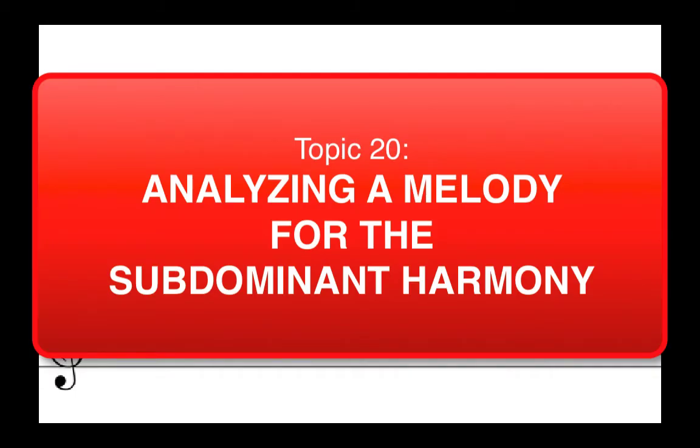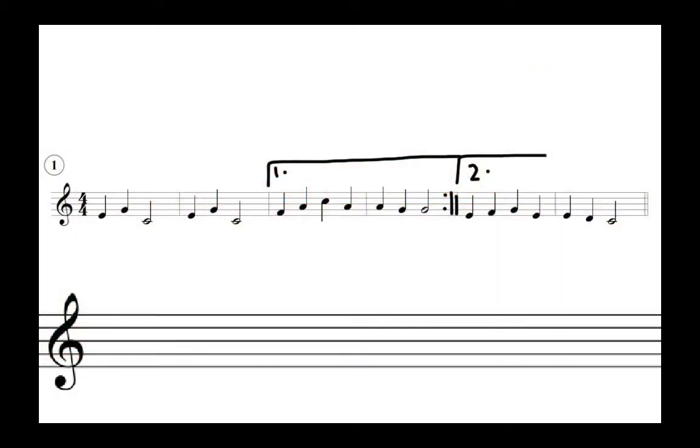In this video we're working through assignment 6.5 number one in which we're asked to bracket the intervals from the subdominant triad. So first we have to examine and figure out what the key is, then identify what the notes of the subdominant triad are, then look to see where those notes have been deployed by the composer, and then just place a bracket around them.